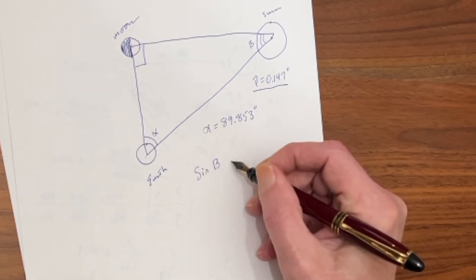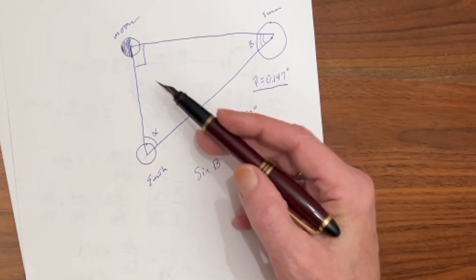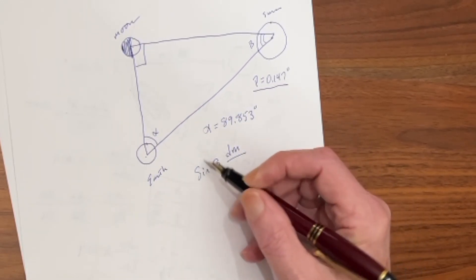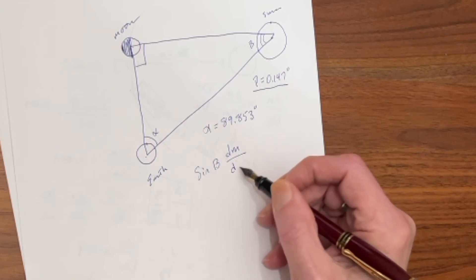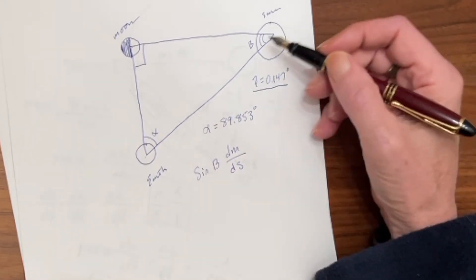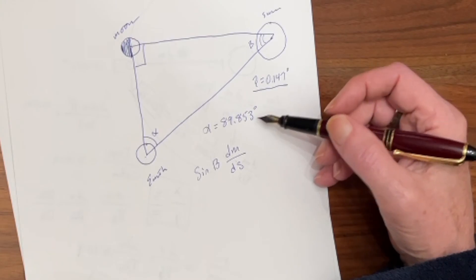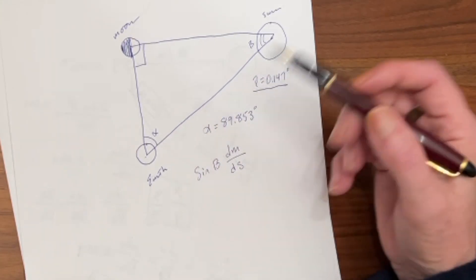The sine of angle beta will equal the opposite side, which is the distance to the moon, over the hypotenuse, which is the distance to the sun. And you can find angle beta simply by taking 90 degrees and subtracting the measured angle at earth.